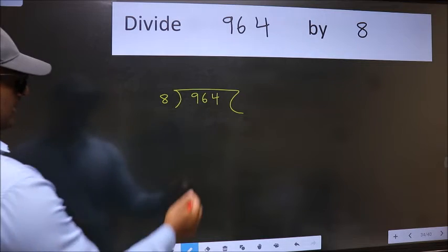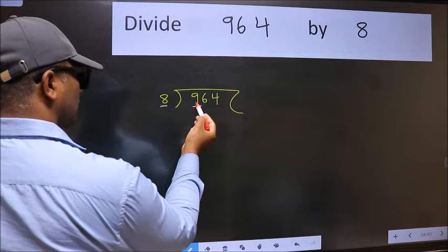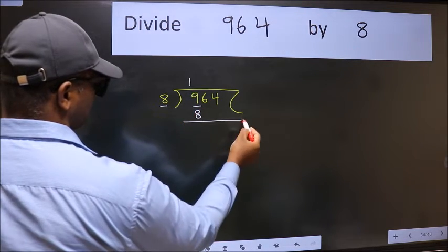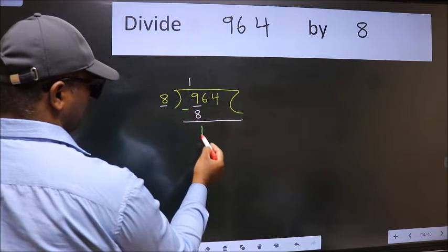Next. Here we have 9 and here 8. A number close to 9 in 8 table is 8 once 8. Now we should subtract. We get 1.